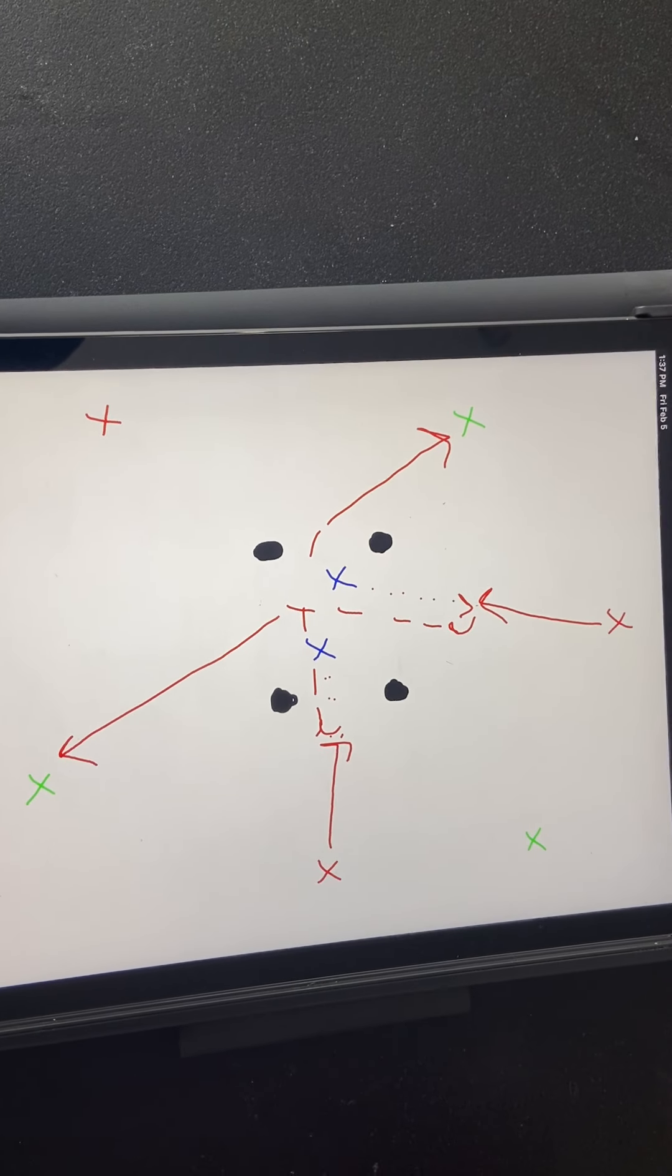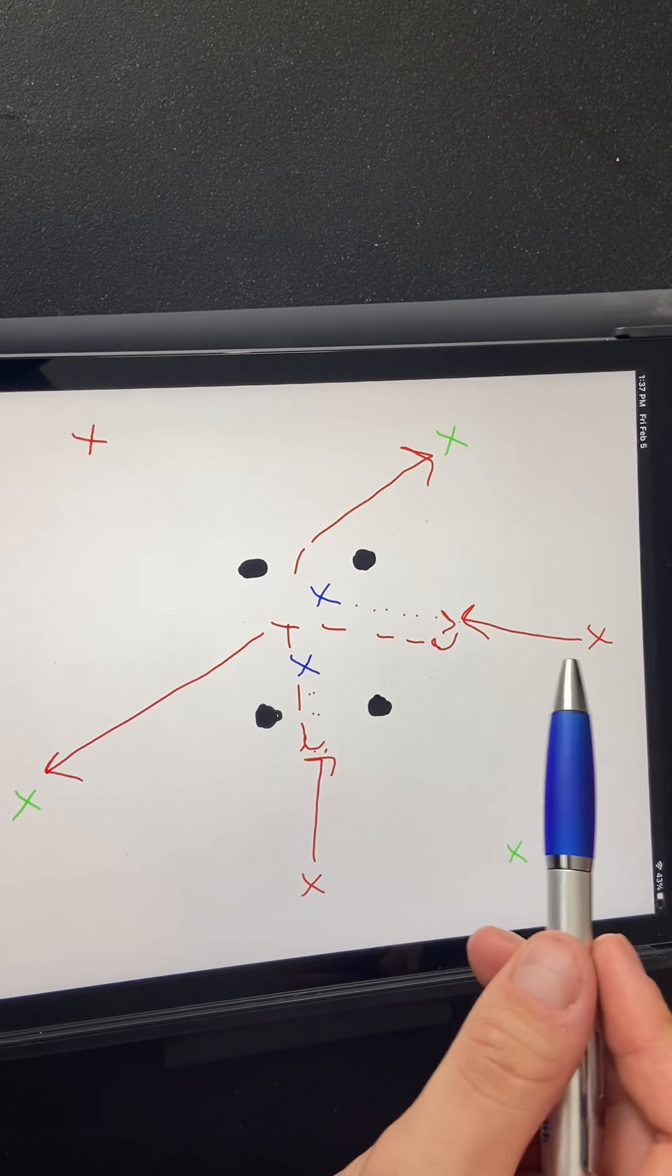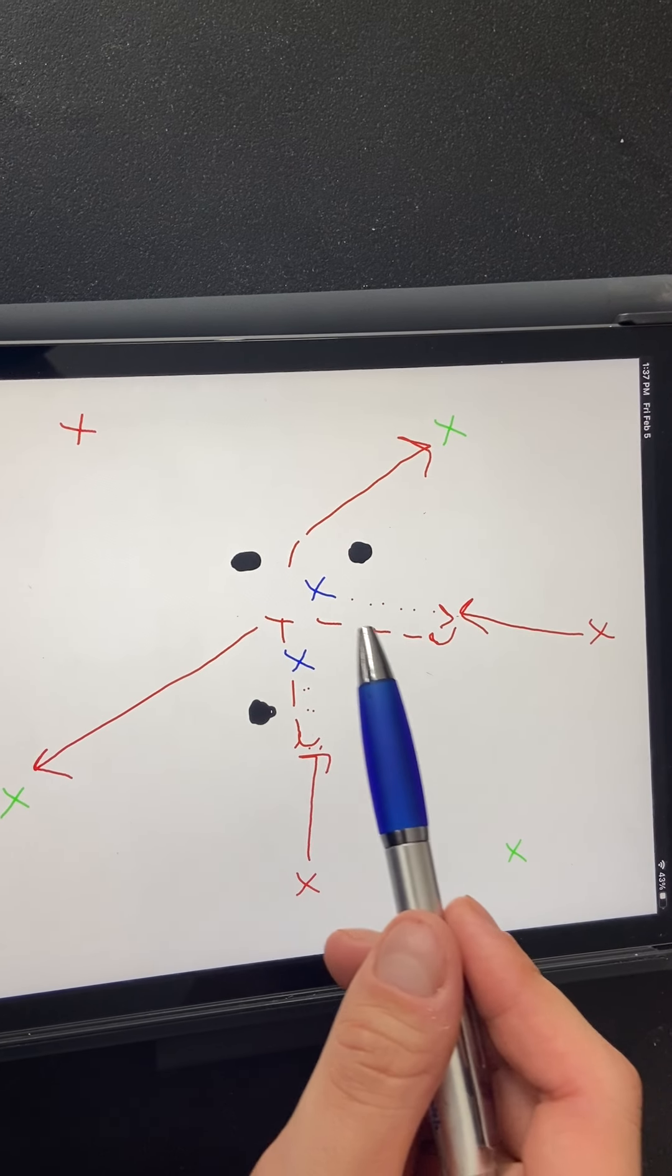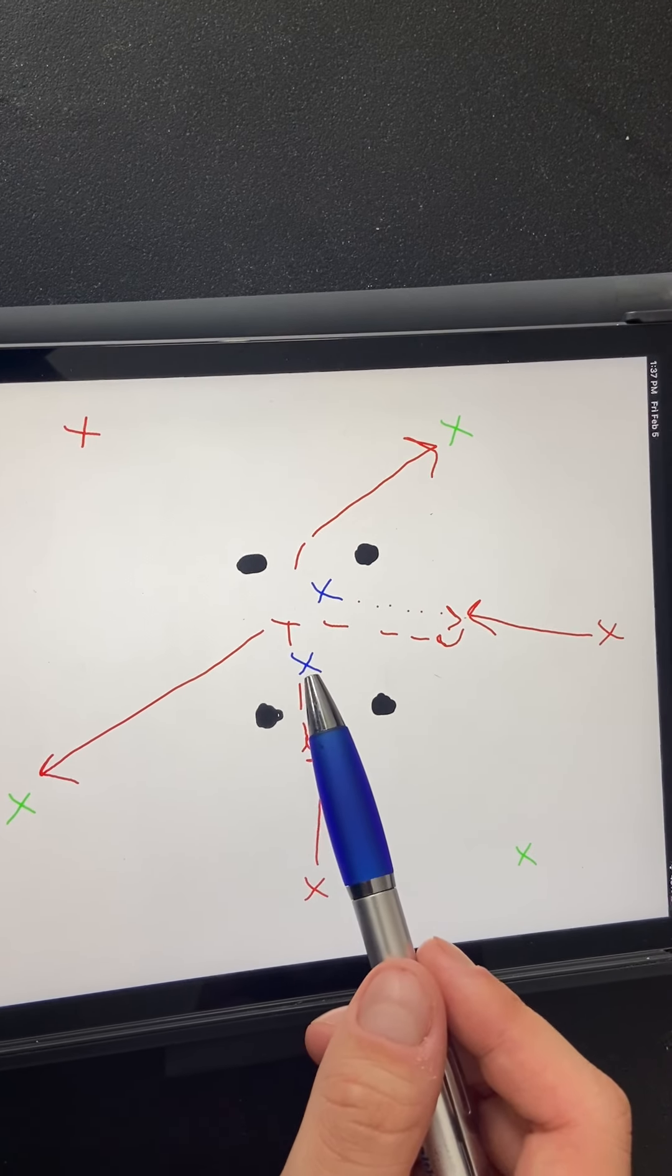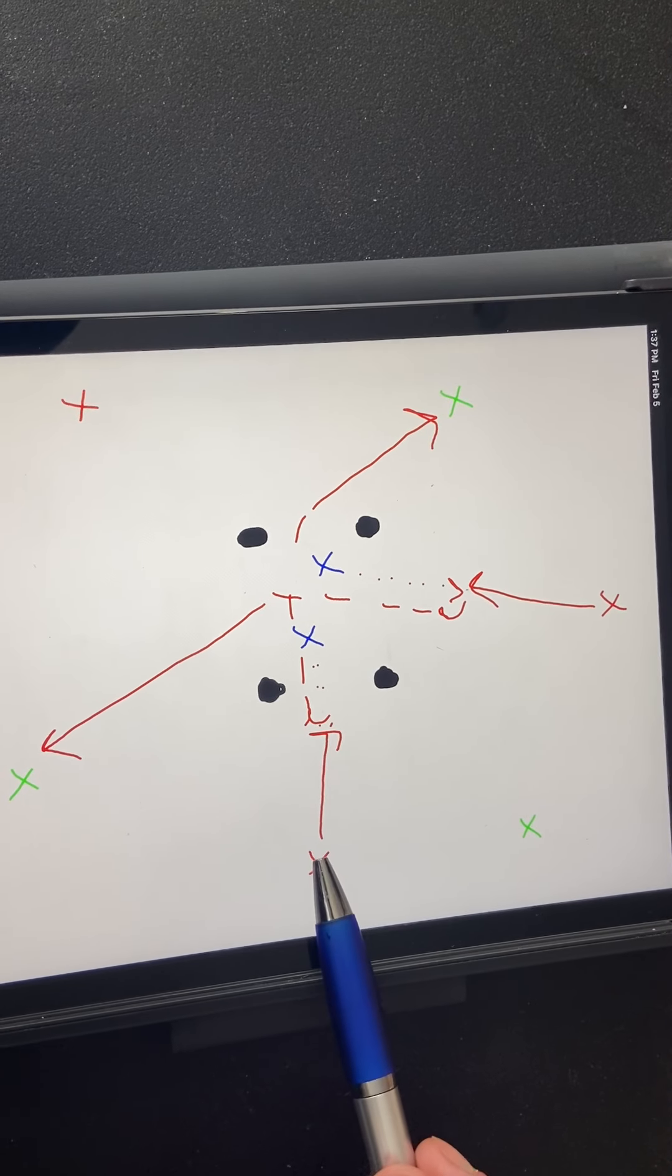So it kind of looked like this. This player checks out to a red player with a ball, receives it, turns, takes their touch back into the box, finds a new player. Same thing at the same time. This player checks out to a player with a soccer ball, turns, finds a new player.